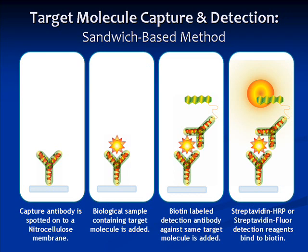Then a second antibody is added, which binds to a non-overlapping epitope on the same protein. This antibody is conjugated to biotin, which allows for the binding of streptavidin HRP or streptavidin fluorophore, as shown in the last panel. From here, the signal can be easily detected using routine laboratory procedures.